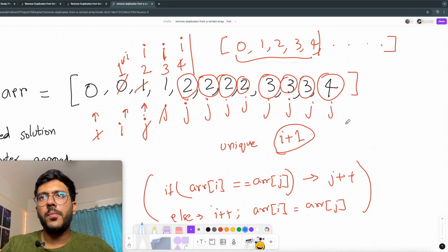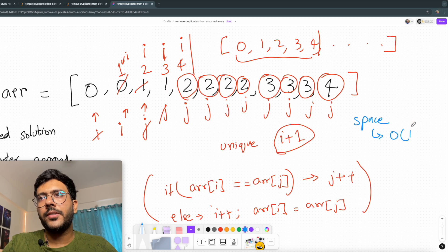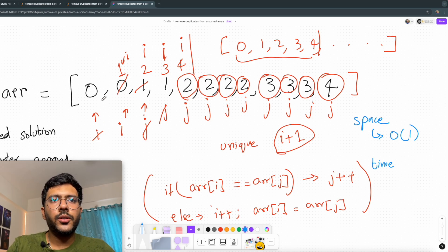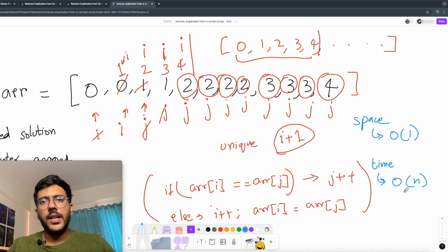Talking about space complexity, we didn't use any extra space, so it has got space complexity of order of 1. And talking about time complexity, we had to iterate this entire array only once, so the time complexity is of the order of n. So these are my complexities.